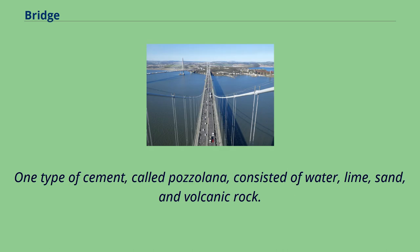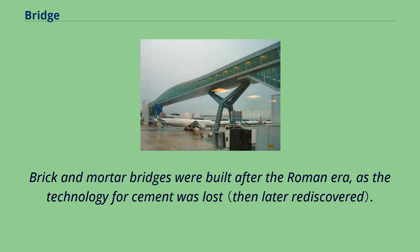One type of cement, called Pozzolana, consisted of water, lime, sand, and volcanic rock. Brick and mortar bridges were built after the Roman era, as the technology for cement was lost.